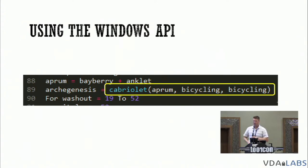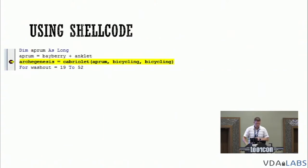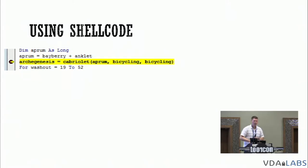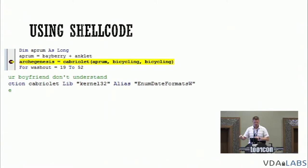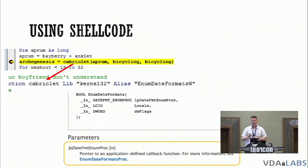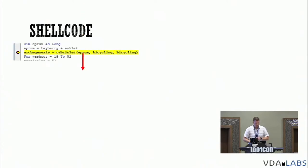That 'cabriolet' alias turned out to be a function called EnumDateFormats. I decided to use a debugger — a combination of static and dynamic analysis — and set a breakpoint on this function call to observe the behavior. This allowed me to not only see the allocated memory but also, because we're about to execute code there, the shellcode had to be in a deobfuscated form at that point. EnumDateFormats takes as its first argument a pointer to an application-defined callback — which is how the shellcode was being executed from within those macros.